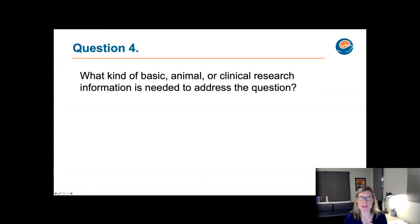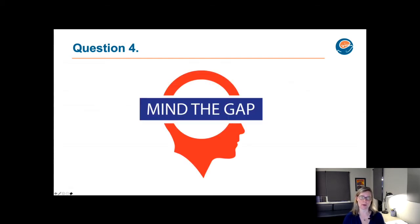So question four: what kind of basic animal or clinical research information is needed to address the question? So depending on what your question is, you might be able to start with a basic study. And it may be more appropriate than a clinical research project. So it just really depends on what you're trying to ask, and what's already been done. But it's important to think about what should be there. Because at the end of the day, what you want to be doing is filling a gap in knowledge. We don't want to duplicate what others have done. And we want to make sure that we're generating new knowledge that will contribute and move clinical care forward, and that the work that we're doing will impact our patients.